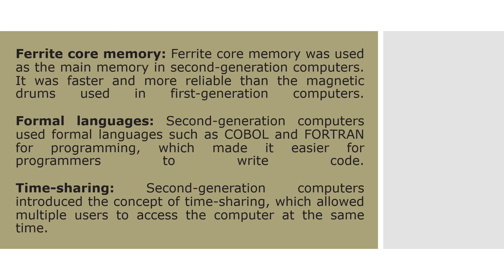Ferrite Core Memory was used as the main memory in second generation computers. It was faster and more reliable than the magnetic drums used in first generation computers. Second generation computers also used formal languages such as COBOL and FORTRAN for programming, which made it easier for programmers to write code. These languages were used by people who worked with computers in the second generation basically to write programs.